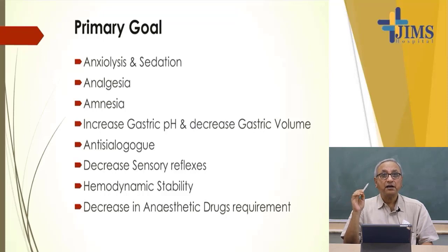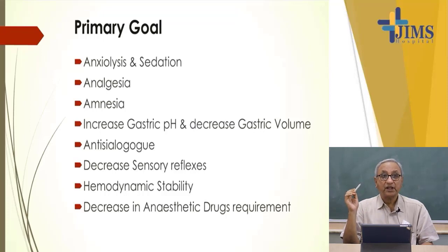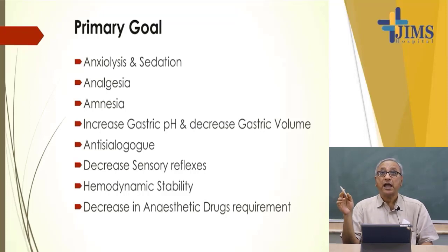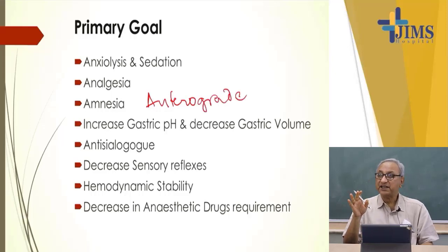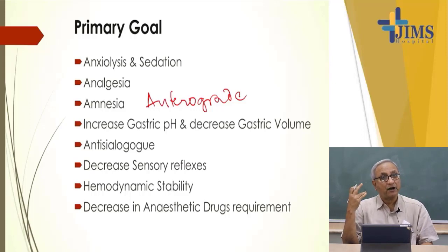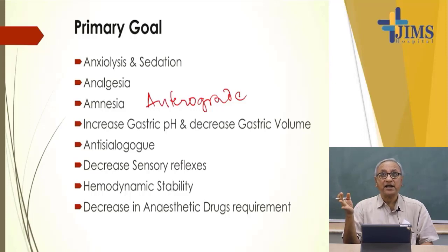The third primary goal is amnesia. Patients should forget whatever has happened, and the amnesia should be anterograde. There are two types: retrograde amnesia, where someone forgets what has occurred in the past, and anterograde amnesia, which relates to what is going to happen. We give a drug so that the patient won't remember what is going to happen later on.